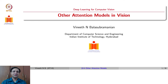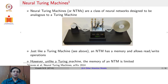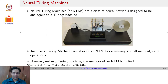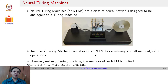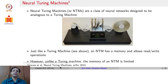Let us start with Neural Turing Machines. Neural Turing Machines, as the name states, denote a class of neural networks that are intended to perform tasks analogous to a Turing machine. Just like a Turing machine, an NTM has memory and read-write operations to access to and from memory to perform subsequent tasks. However, unlike a Turing machine, you need to have fixed memory to be able to treat this as a neural network and learn operations.